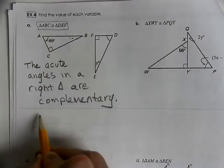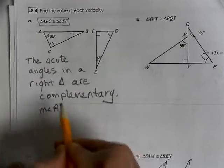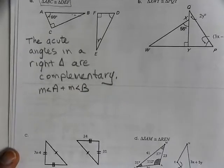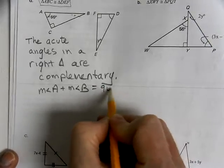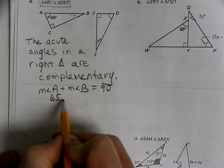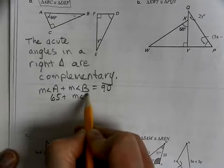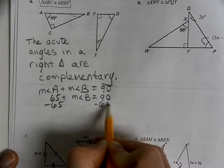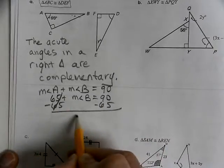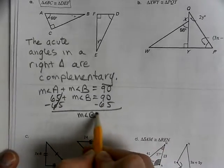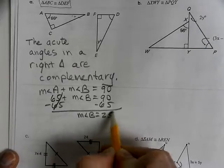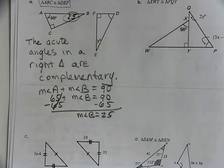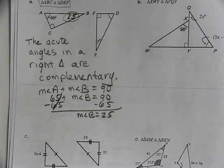The acute angles of a right triangle are complementary. So, if you have angle A and angle B, you know that those are going to add up to 90 degrees. So, the measurement of angle A plus the measurement of angle B is going to be 90 degrees. If A is 65, we can subtract the 65 to figure out that the measurement of angle B is 25. I like to circle it up in my picture to show that I calculated that 25.